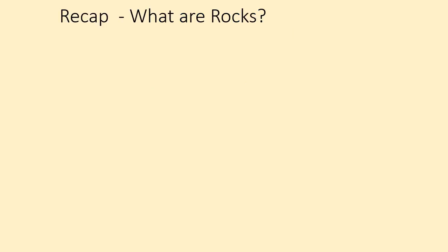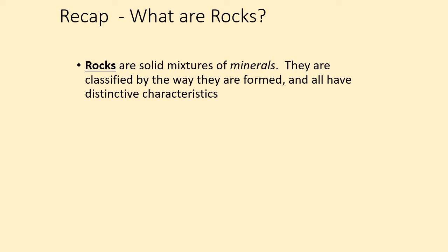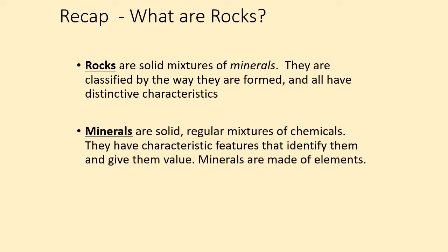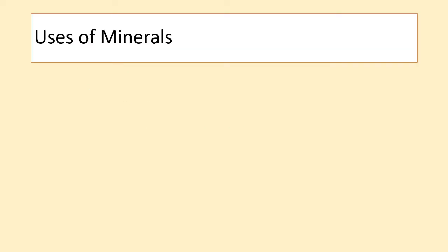So as a recap: what are rocks? Rocks are solid mixtures of things called minerals and they are classified by the way in which they are formed, and each type of rock will have distinctive characteristics. Minerals are solid regular mixtures of chemicals and they have characteristics that identify them and give them value. Minerals are made of chemical elements — these are the things that rocks are made of.